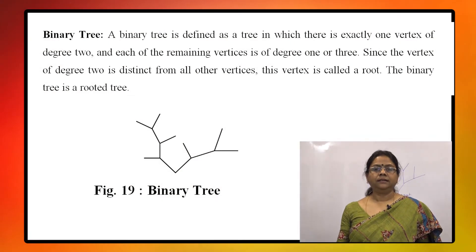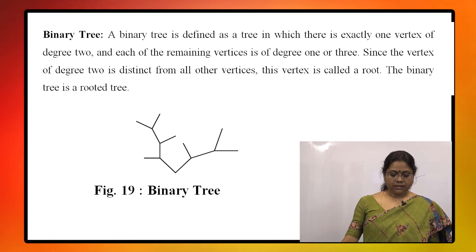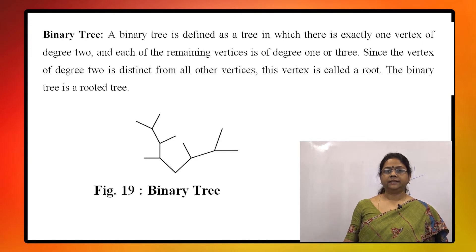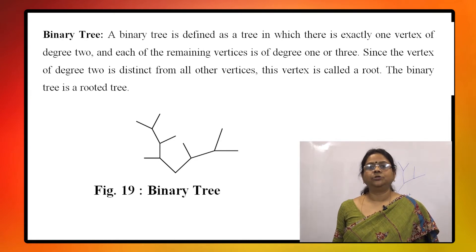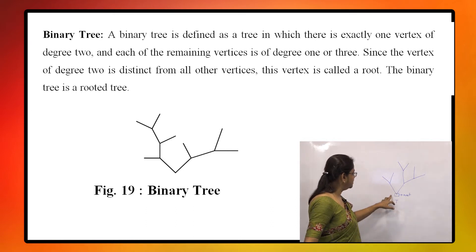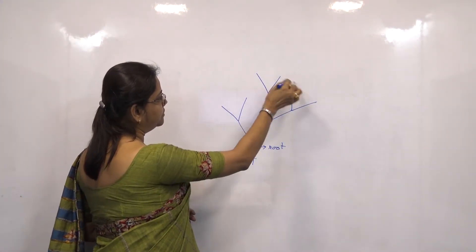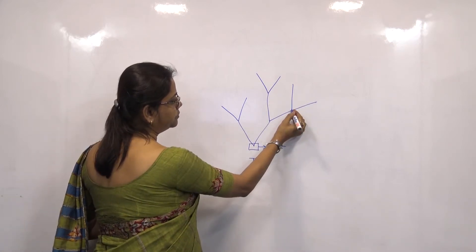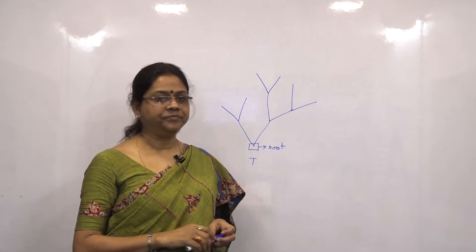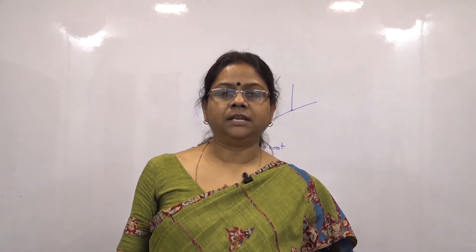Now we define binary tree. A binary tree is a tree in which there is exactly one vertex of degree 2 and each of the remaining vertices is of degree 1 or 3. This degree-2 vertex is distinct from any other vertices, so it is called a root. A binary tree is a rooted tree.